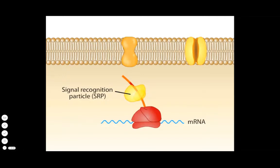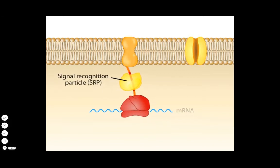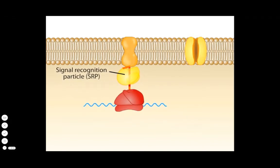SRP delivers the stalled ribosome and its nascent protein to the cell membrane, where SRP binds to a membrane protein called FtsY.